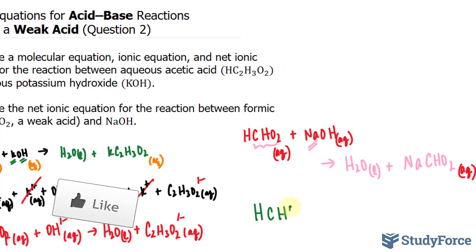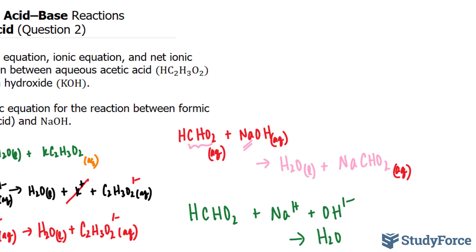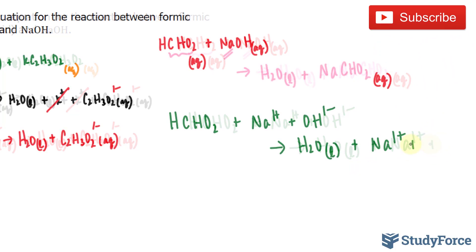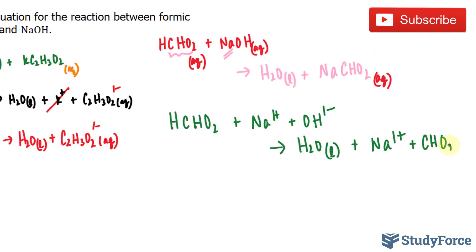HCHO2, plus this will dissociate, it's a base, Na1+ OH1-. This yields H2O, which will stay the way it is because it's in its liquid state, not aqueous. I'll write down L, and I'll write down AQ for the other compounds afterwards. Plus Na, this will dissociate, plus CHO2, one minus.